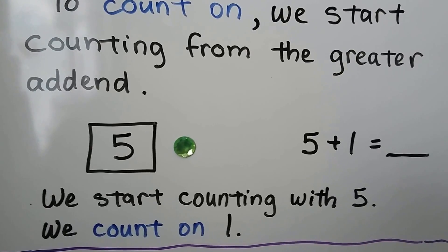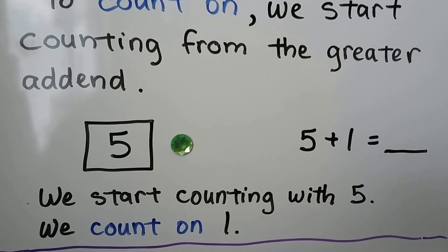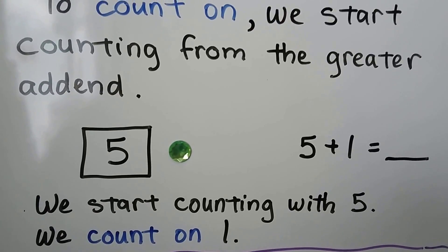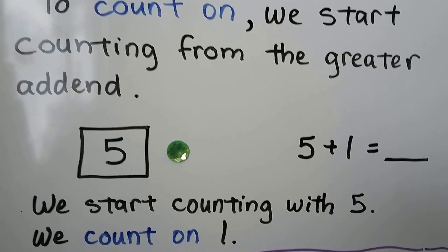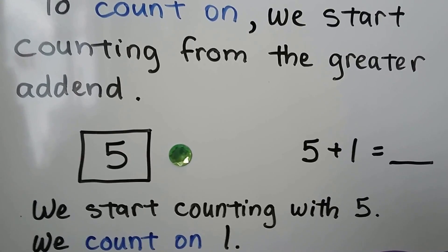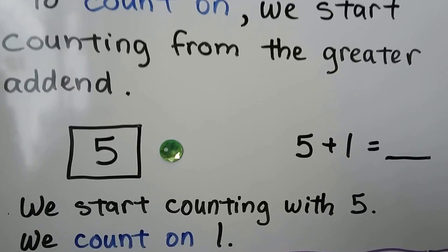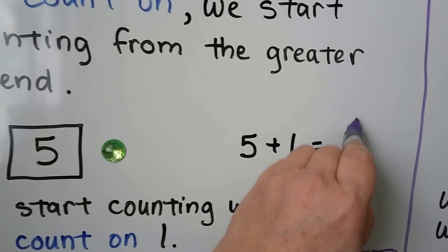If we have 5 and we want to count on 1, we start counting with the 5 — it's greater than 1 — and we count on the 1. 5, 6. 5 plus 1 is equal to 6.